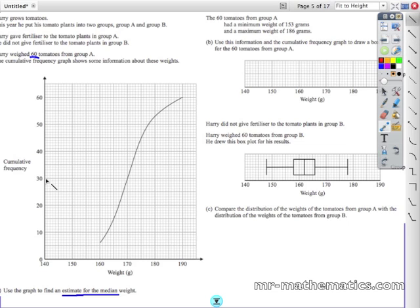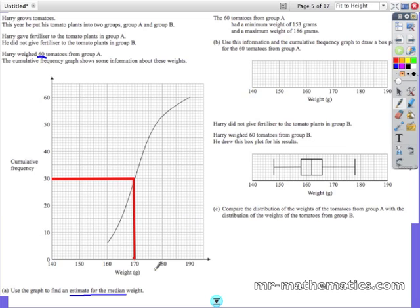So we will draw a line from our cumulative frequency of 30 to our curve and from the x-axis you can see the median for the 30th has a weight of 170.